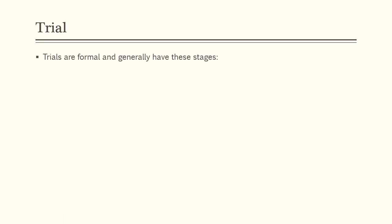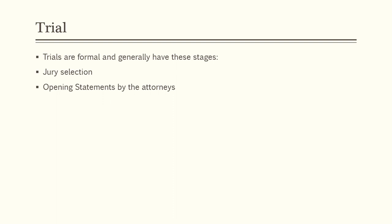Now let's talk about trials. Trials are very formal and generally have these stages. Jury selection is where you question jurors about their fitness to serve — whether they have any innate prejudices that would prevent them from rendering a fair and impartial verdict. In state court, lawyers are often allowed to ask questions of the jurors directly, but in federal court you must submit questions and the judge does it. After jury selection, the attorneys make their opening statements — the roadmap of the trial, telling jurors what they're going to prove and how.